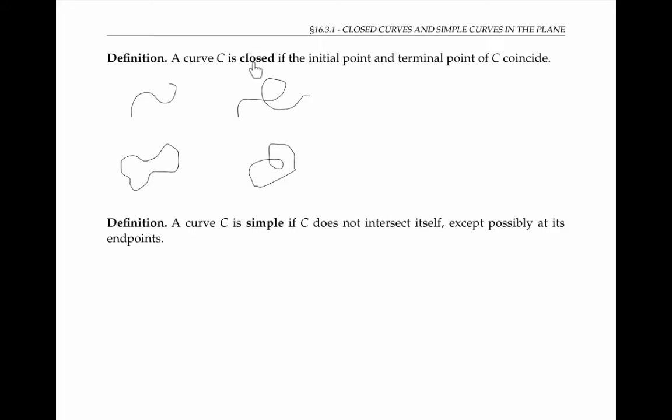A curve C is called closed if its initial point and terminal point coincide. So this first curve is not closed because its initial point and its terminal point do not coincide.